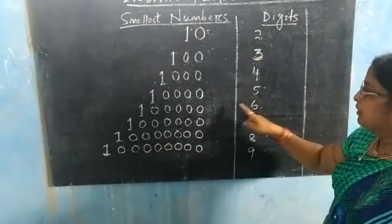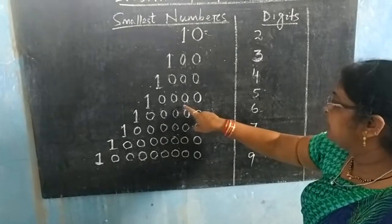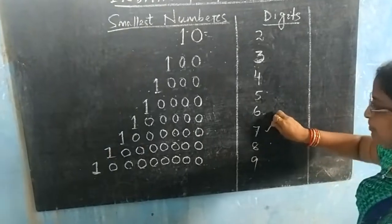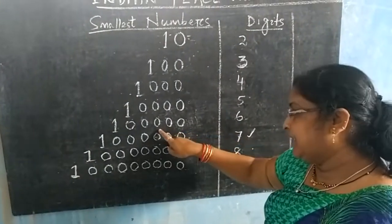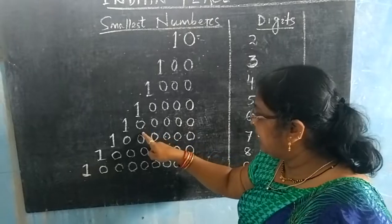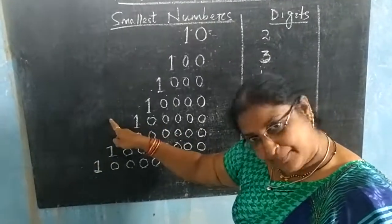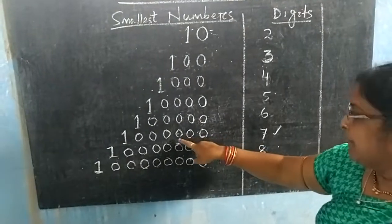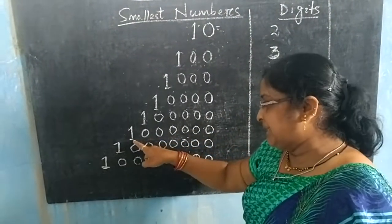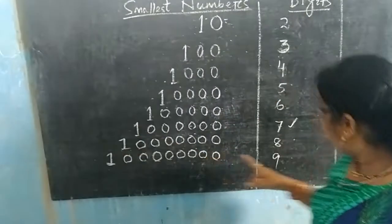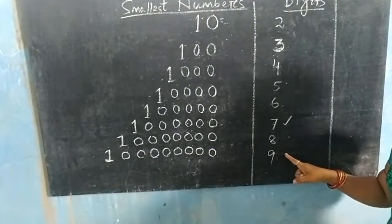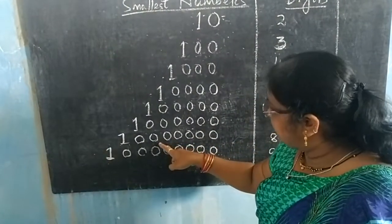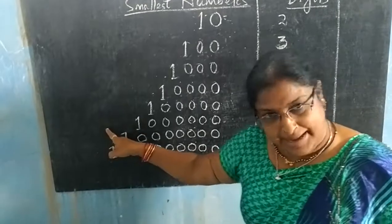6-digit number: 1, 2, 3, 4, 5 and 6. 7-digit number: 1, 2, 3, 4, 5, 6 and 7. 8-digit number: 1, 2, 3, 4, 5, 6, 7 and 8. Lastly, 9-digit number: 1, 2, 3, 4, 5, 6, 7, 8 and 9.